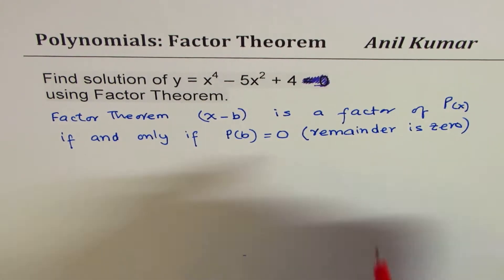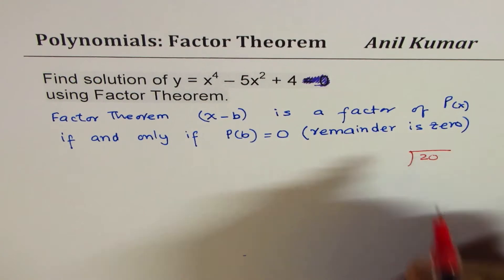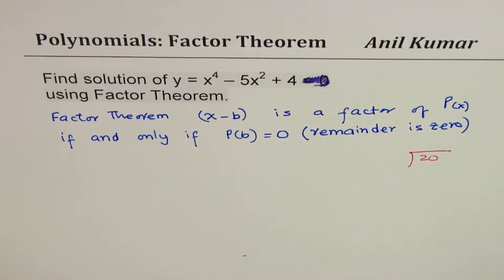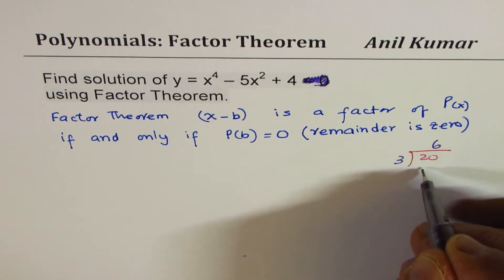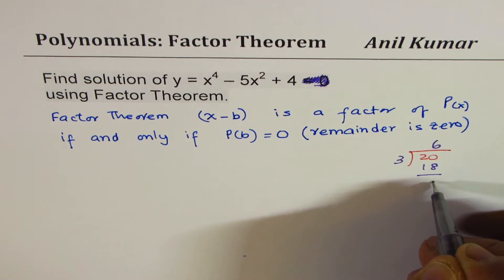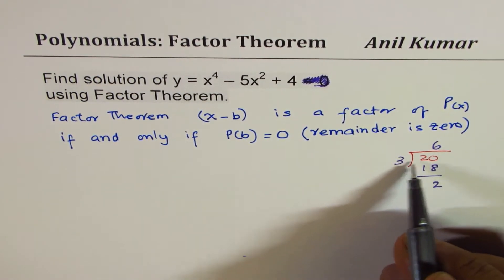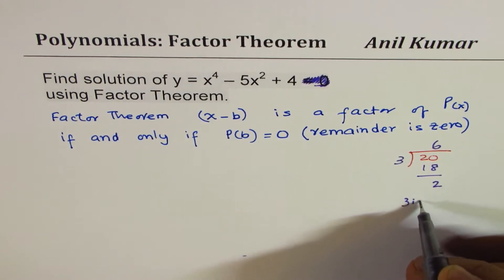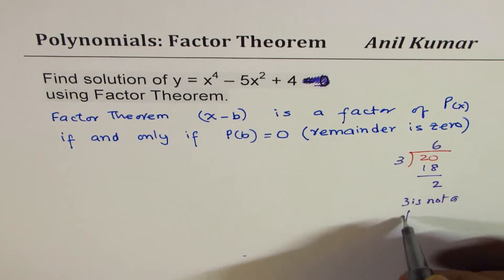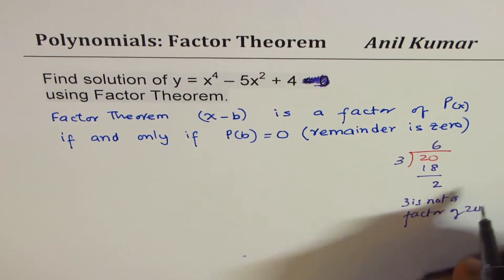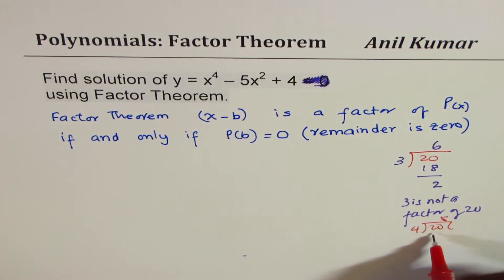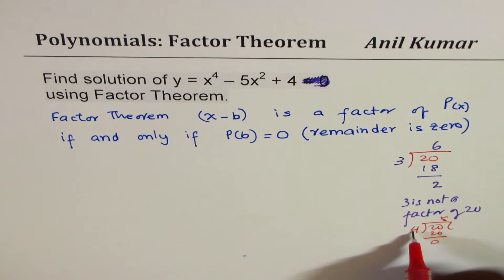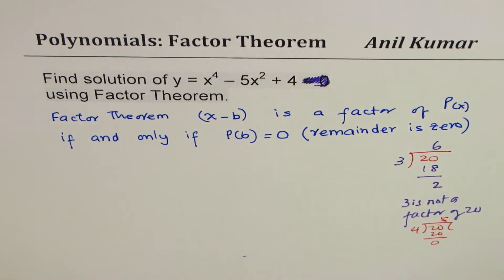Normally, if I divide 20 by 3, I get 3 times 6 is 18, and I have a remainder of 2. So that means 3 is not a factor of 20. However, if I divide by 4, the remainder is 0, so 4 is a factor. This is a simple concept which we have learned and which we are going to apply.